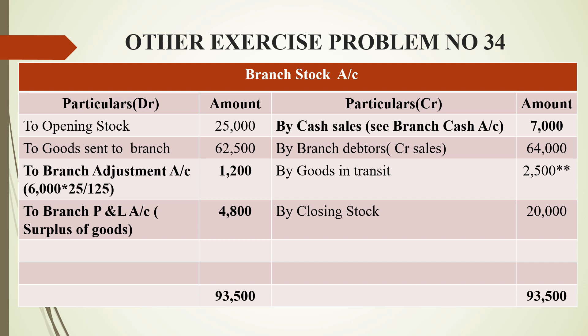Now prepare the branch stock account. On the debit side, opening stock comes first — it's almost like purchasing from the previous year, so cash is going out; that's why opening stock appears on the debit side. Next is goods sent to branch — goods have gone out from head office books, so it's on the debit side. In branch books it would be credit side, and goods to head office is debit side. We leave branch adjustment account and P&L account for now.